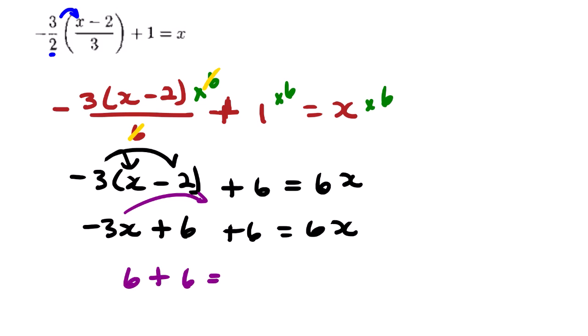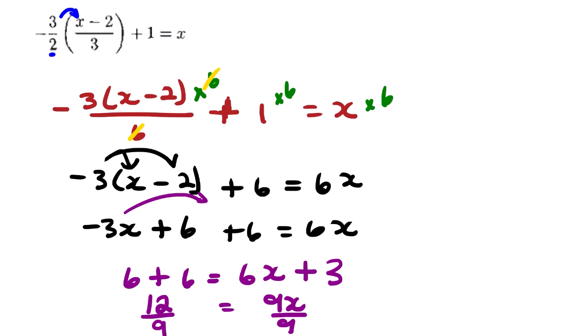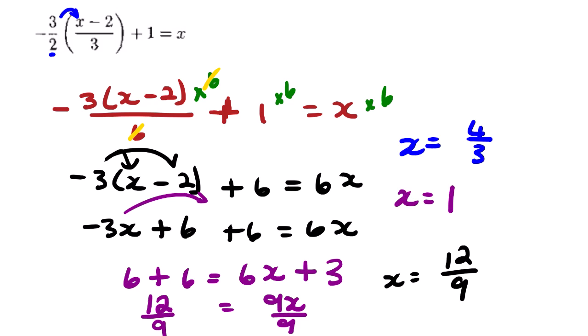Simplifying: 6 plus 6 gives 12, so negative 3x plus 12 equals 6x. Transposing negative 3x to the other side: 12 equals 6x plus 3x, which gives 12 equals 9x. Dividing both sides by 9: x equals 12 over 9, which simplifies to 4 over 3. Expressing as a mixed fraction: 3 goes into 4 once with remainder 1, so x equals 1 and 1 over 3. This is the correct option.